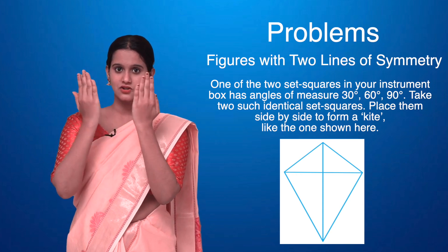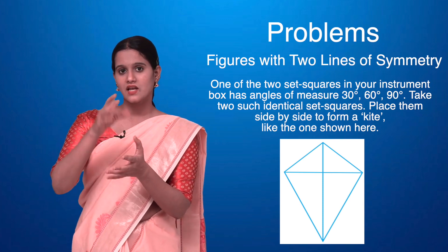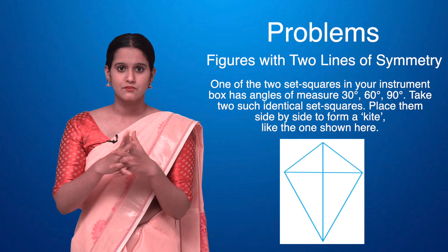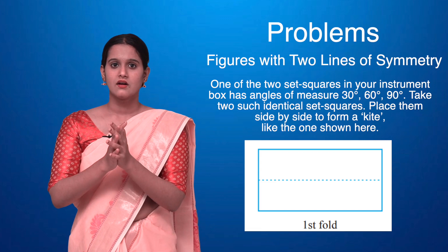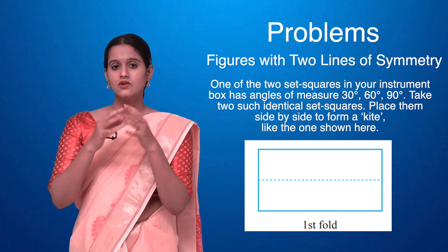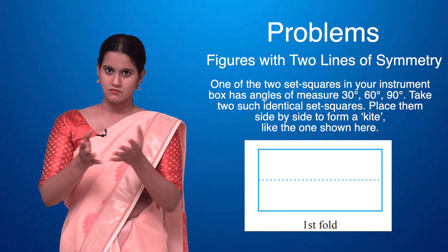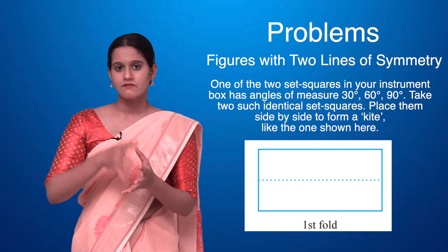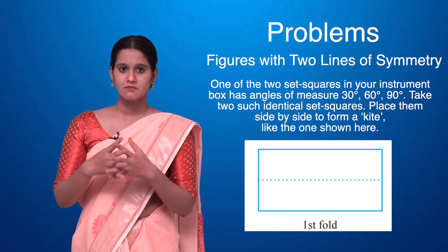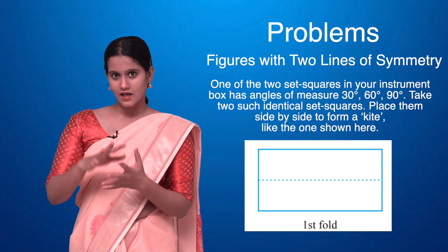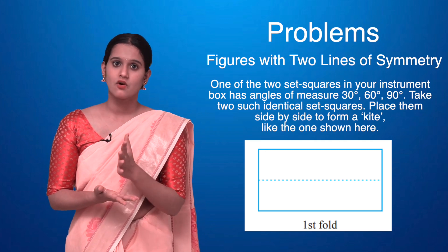When the two set squares are placed side by side, there is a line of symmetry and two halves are formed. Now, can you say how many lines of symmetry are present in this diagram? Using the set squares I just constructed a kite. If I fold on the middle line, one half is symmetric to the other. Can I get another line of symmetry by folding again? That's for you to explore.